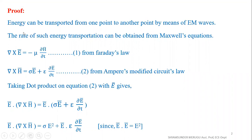We know that energy can be transported from one point to another by means of electromagnetic waves. The rate of such energy transportation can be obtained from Maxwell's equations. We have time-varying Maxwell's equations: from Faraday's law, ∇ × E̅ = −μ ∂H̅/∂t (equation 1), and from Ampere's modified circuit law, ∇ × H̅ = σ E̅ + ε ∂E̅/∂t (equation 2).